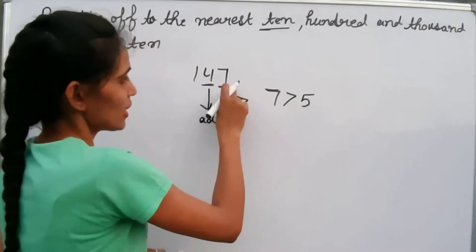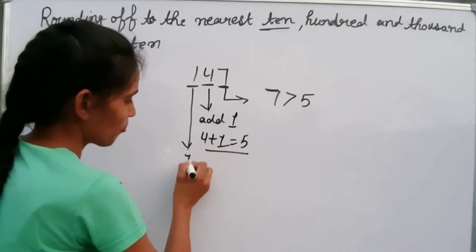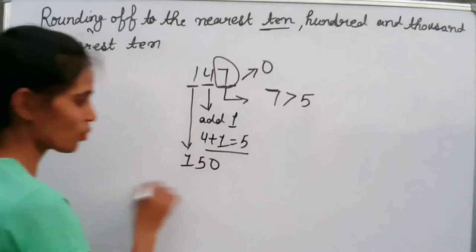We add 1 to the tens digit. 4 plus 1 equals 5. The hundreds place value stays the same, and the ones digit becomes 0. So the answer is 150.